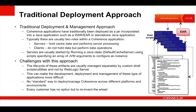Coherence applications have traditionally been deployed as a JAR, incorporated into a Java application such as a WAR or EAR, or a standalone Java application. Typically there are usually two roles within a Coherence application: servers which hold cache data and perform server processing, and clients that do not hold data but perform data operations. Servers are usually started by running a Java class called DefaultCacheServer, using scripts and specifying an array of JVM arguments to configure an instance.